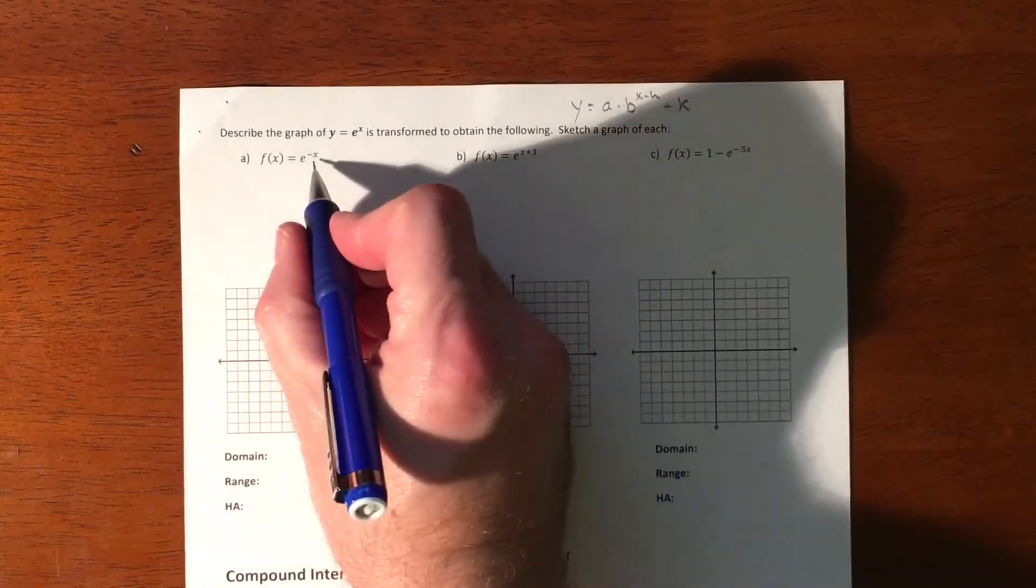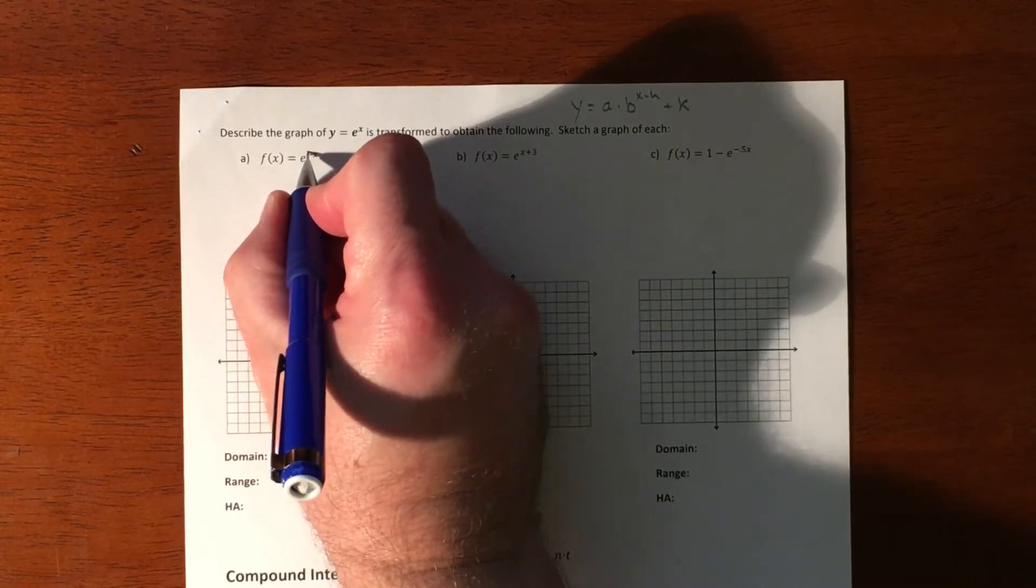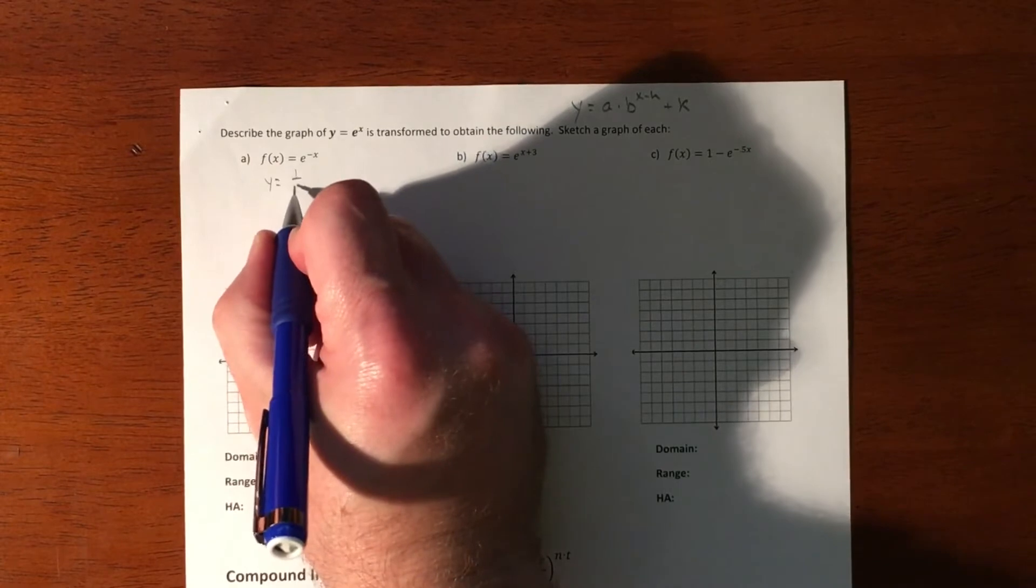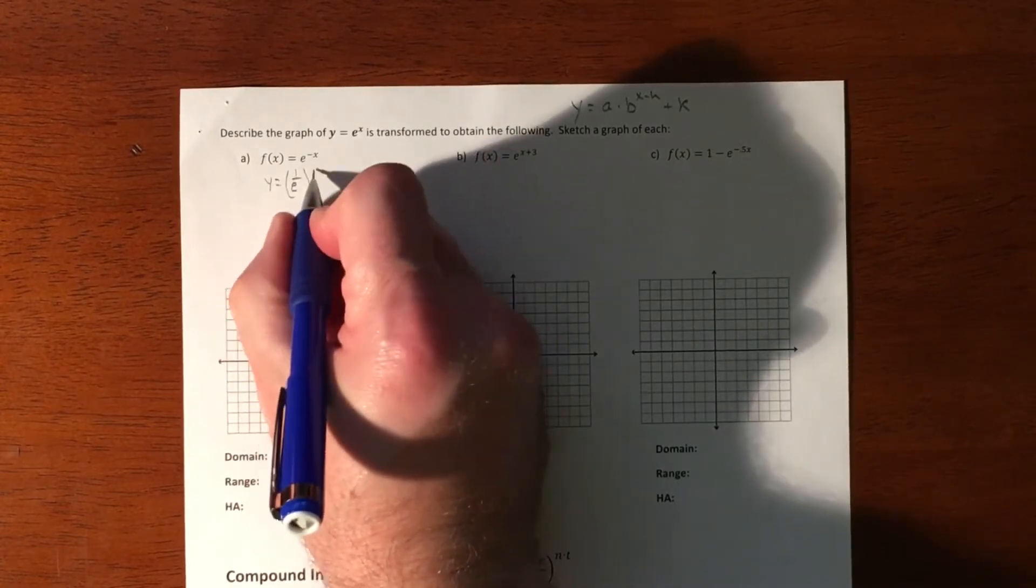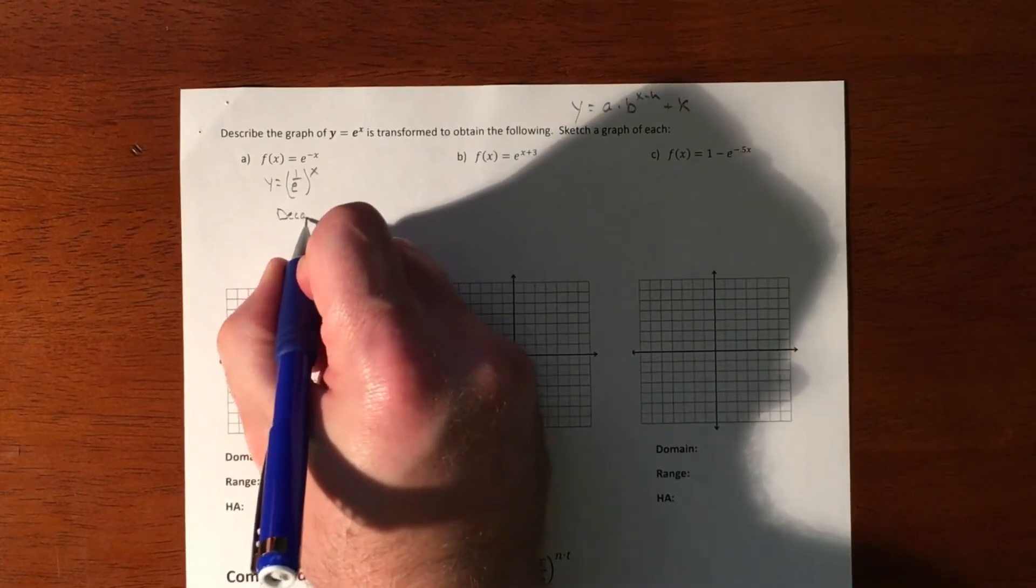So if we're going to graph this, we can rewrite this. First off, E is greater than 1, so we have a growth, except we have this negative. So I'm going to rewrite this as 1 over and make it a positive, which now makes it decay.